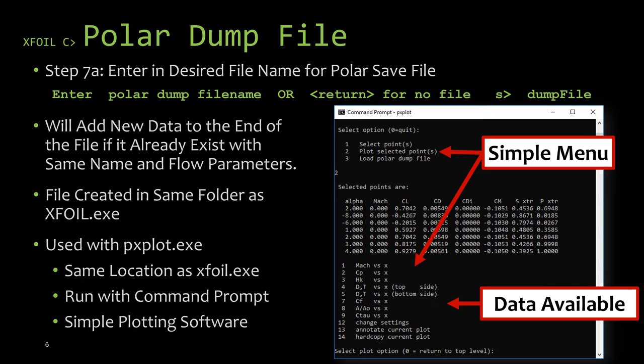The polar dump file is actually pretty similar to the polar save file. For instance if we wanted to create a polar dump file we just have to specify the file name that we're wanting and it will automatically create the file and automatically save all of the data into the file as we're running our analysis. If the file already exists and has the same airfoil name and flow parameters then it'll just go ahead and add on the extra data points onto the end of the file and of course if those aren't the same then it will prompt you that you have an issue.